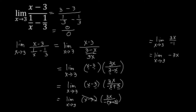We can now substitute. Substituting, we have negative 3 times x replaced with 3, and that will be equal to negative 9. So the limit of this entire function is equal to negative 9.